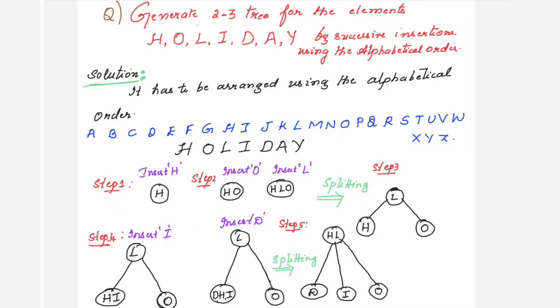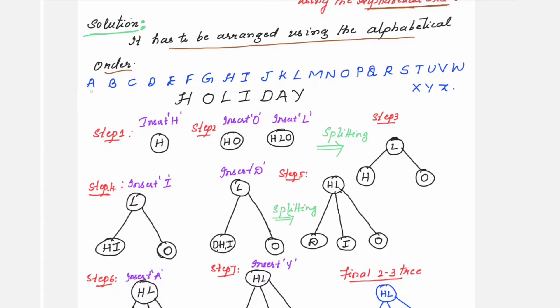The question will be in this manner: generate a 2-3 tree for the elements. The elements are all alphabets: H-O-L-I-D-A-Y, holiday is the word. By successive insertions using the alphabetical order. In the question itself, it's mentioned to use alphabetical order. The solution is it has to be arranged using alphabetical order. You know the order alphabets are in English language, but I've still written here. Let's start inserting one by one.